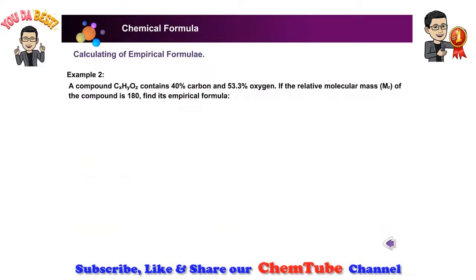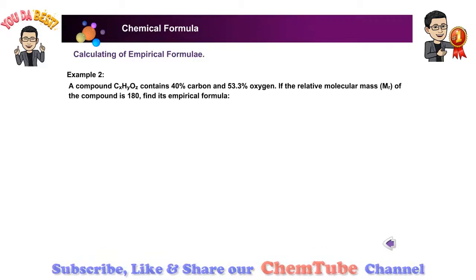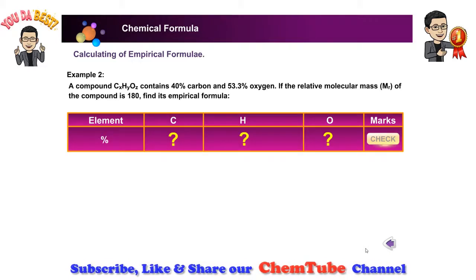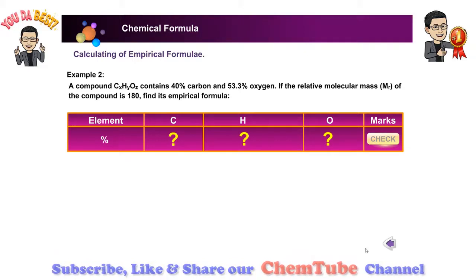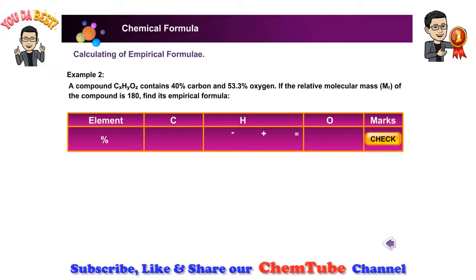An unknown hydrocarbon contains 40% carbon and 53.3% oxygen. If the relative molecular mass of the compound is 180, find its empirical formula. Step 1: Find the mass or percentage of elements X and O in the compound. Type in your answer in the blank space provided and click the check button.